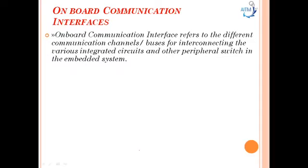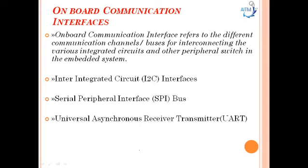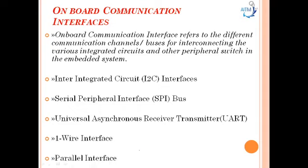The onboard communication interface refers to the different communication channels or buses for interconnecting various ICs and peripheral devices in embedded systems, all found on the printed circuit board. These include: inter-integrated circuit (I2C), serial peripheral interface (SPI), UART (universal asynchronous receiver-transmitter), one-wire interface, and parallel interface.